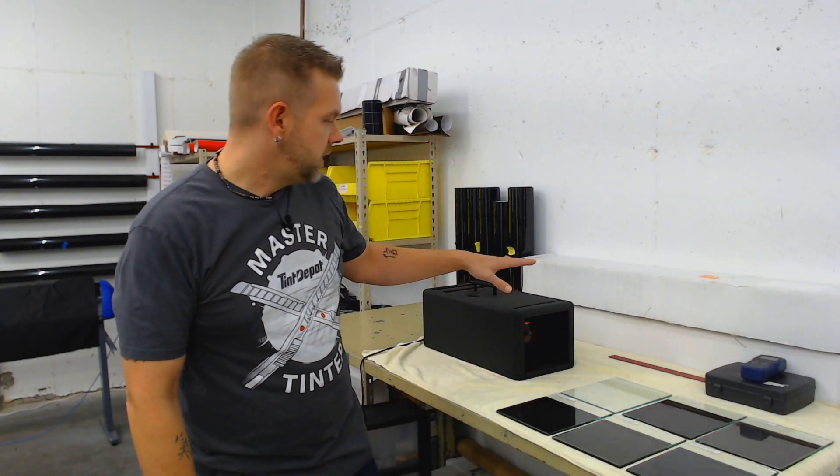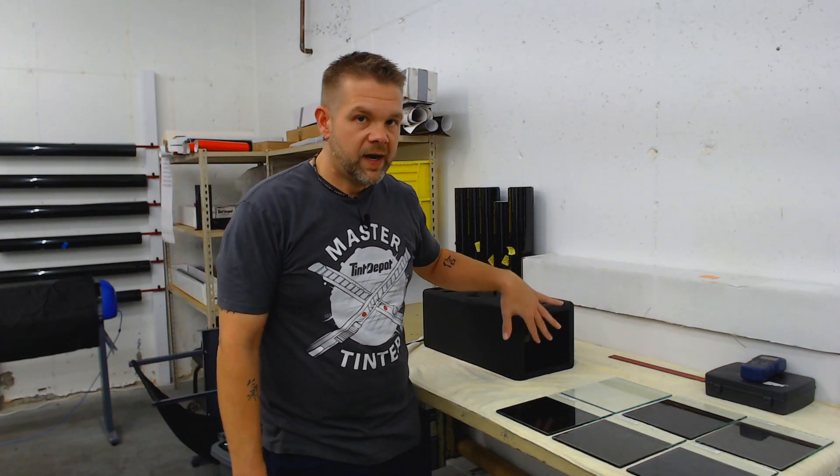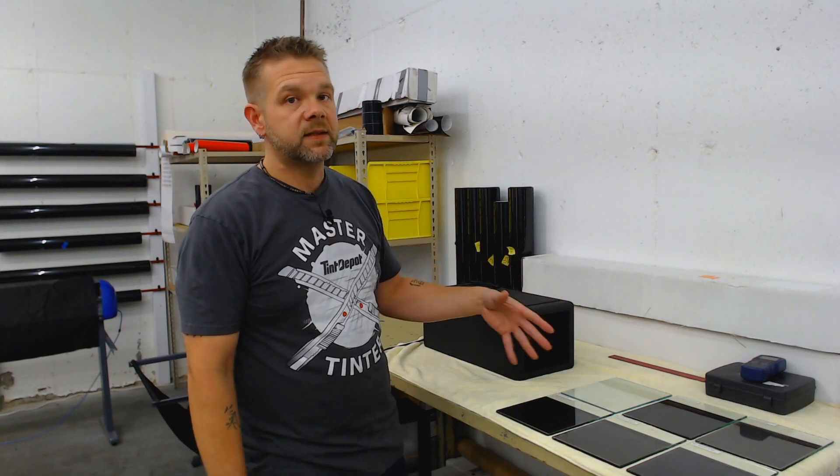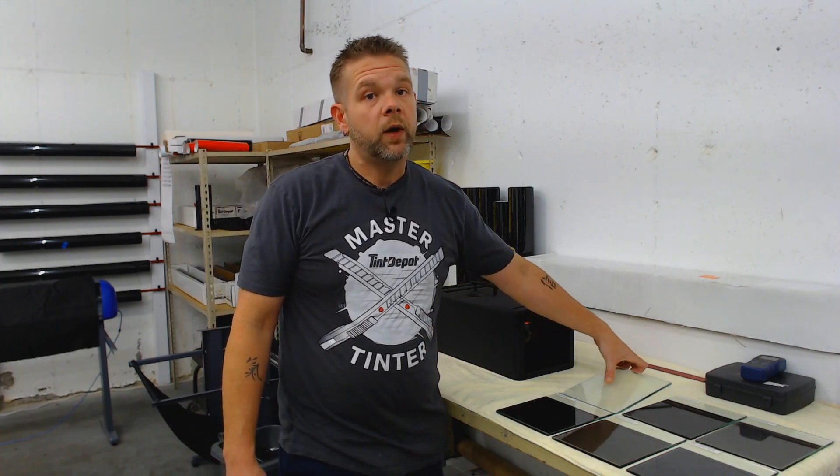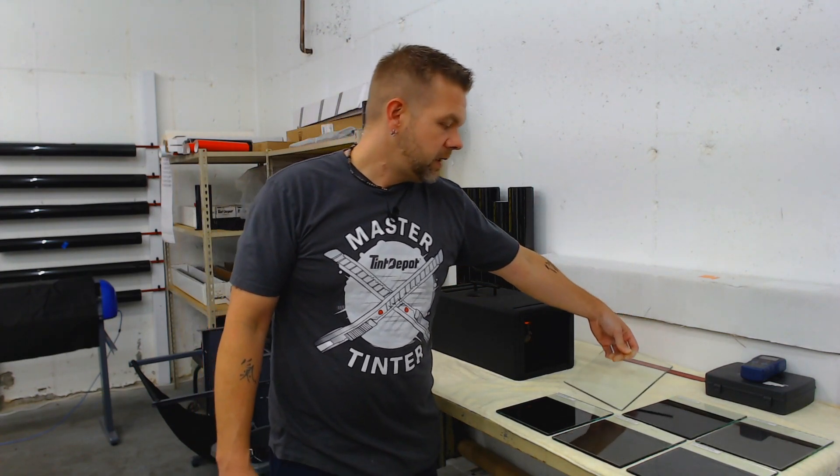We're going to get everything set up. So we're going to actually, we're going to measure without a slide in it, just the bulb heat itself. Call it your window rolled down on a hot summer day. And then we're going to roll the window up and use a clear slide. And then we'll move on from there.